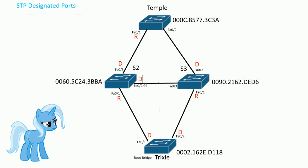After finding all the designated ports, it's easy to finish up. Anything that's not a root port or designated port goes into a blocking state — it becomes an alternate port. So the remaining sides on this link go into a blocking state as alternate ports. That completes the process: we've found the root bridge, root ports, designated ports, and finished with the alternate blocking ports.